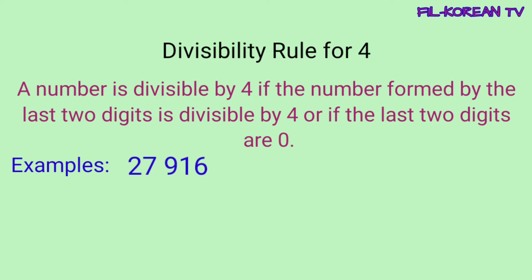27,916 — ang number na nabuo ng dalawang numero sa hulihan ay 16. Ang 16 ay multiple ng 4, divisible by 4 ang 16. Kaya naman, yung given number na 27,916 ay divisible by 4.